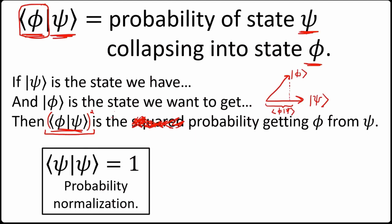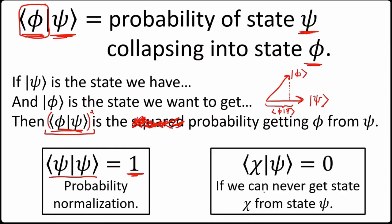One consequence is that when we take the inner product of a state with itself, the probability must be one — states have to be normalized, or the probabilities don't make sense. Another rule: if we can never get a state chi from a state psi, then their inner product has to be zero. For example, the up state collapsing onto the down state is impossible, giving zero — the states are at right angles to each other in state space.